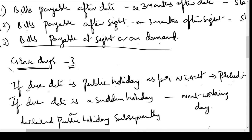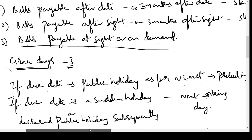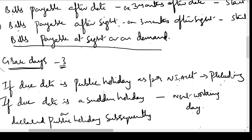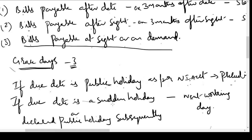If the due date is a sudden holiday, then it is the next working day. If the due date is subsequently declared as a holiday after the bill has been drawn, the government notifies it as a holiday under the NI Act, and in such case the next working day will be considered as the due date. Not all Saturdays or Sundays are public holidays — only those days declared as public holidays under the NI Act for the purpose of the NI Act will be considered as such.